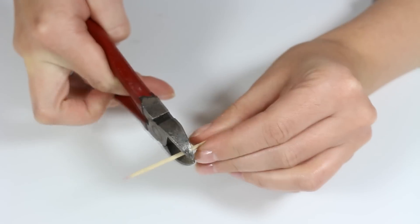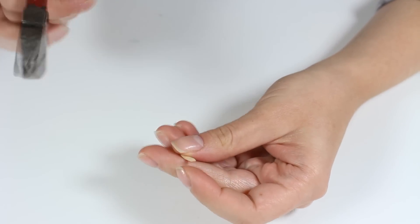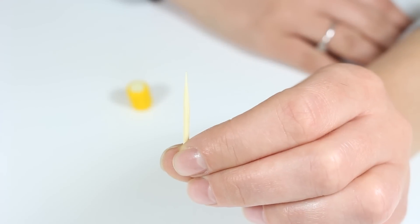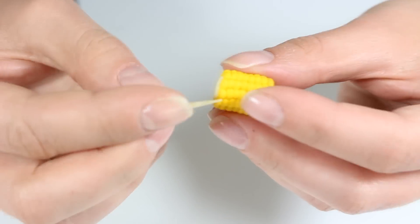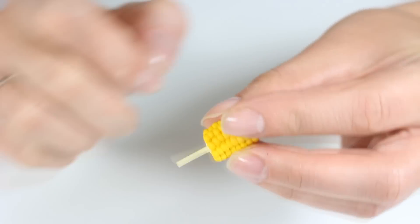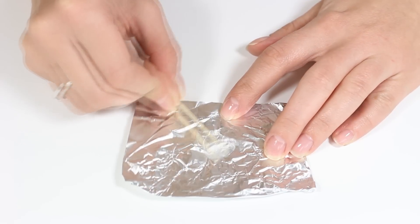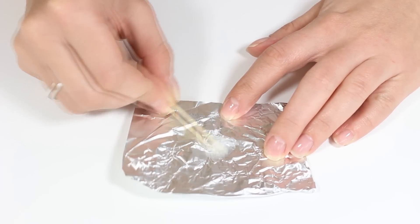Meanwhile, I'm going to take pliers and trim the toothpick to make sure it fits to my corn. Here I'm mixing my epoxy glue and I'm going to use it to secure the toothpick in place.